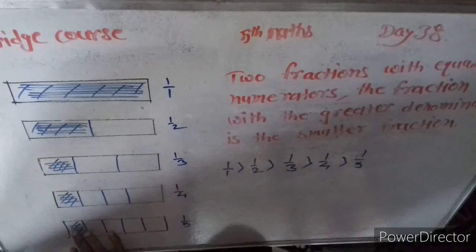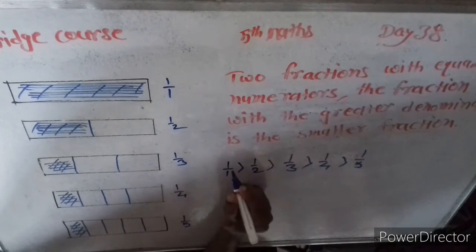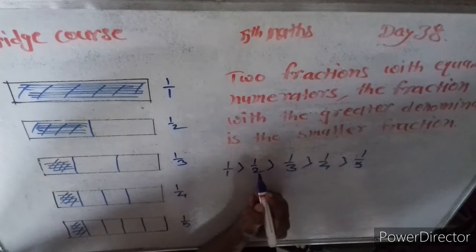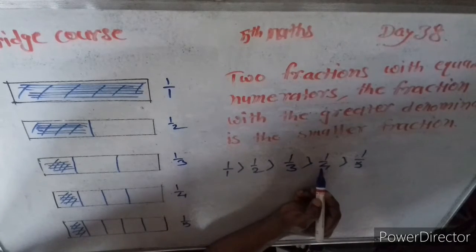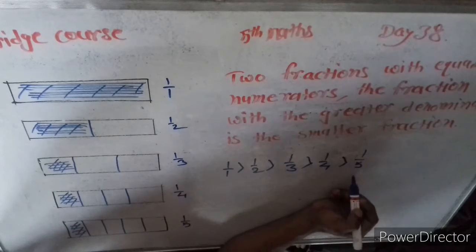Now we saw one by one is greater than one by two, one by two is greater than one by three, one by three is greater than one by four, and one by four is greater than one by five.